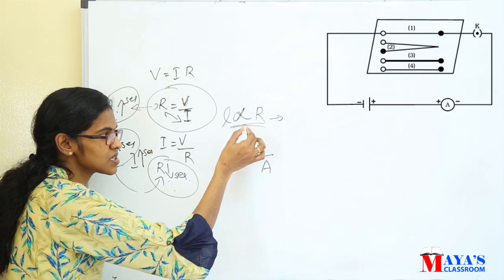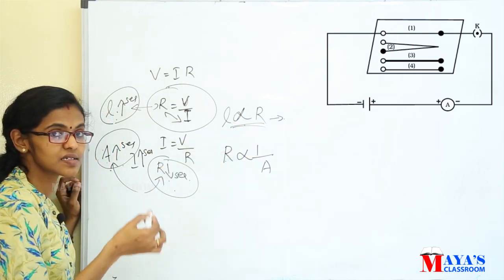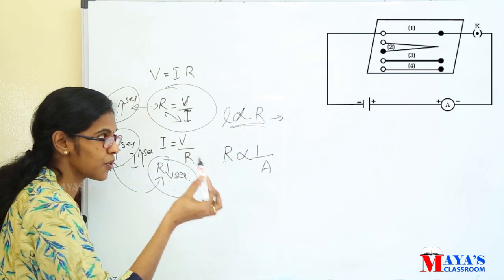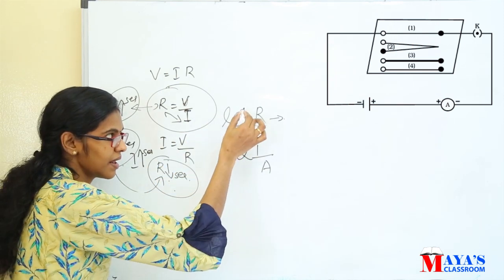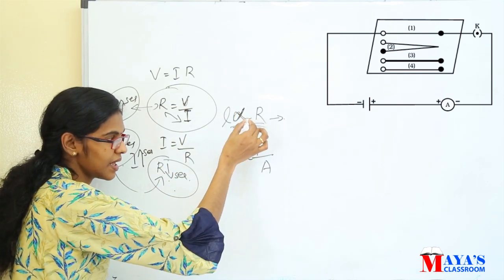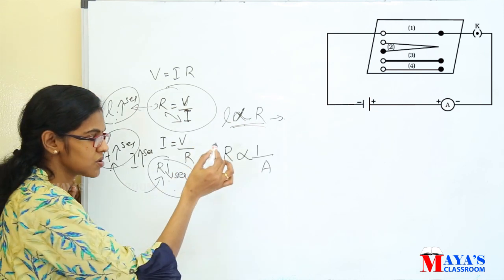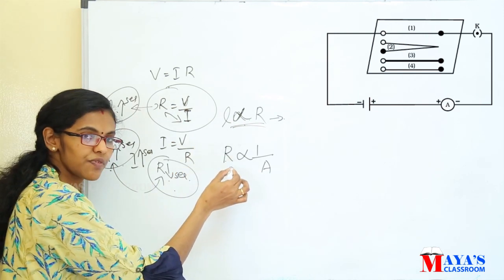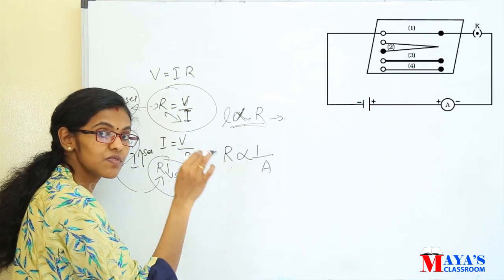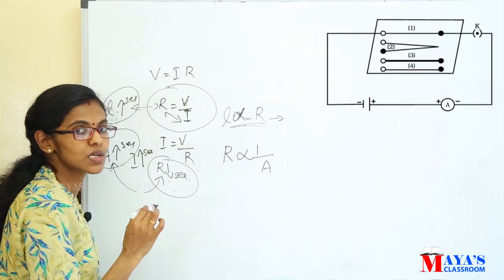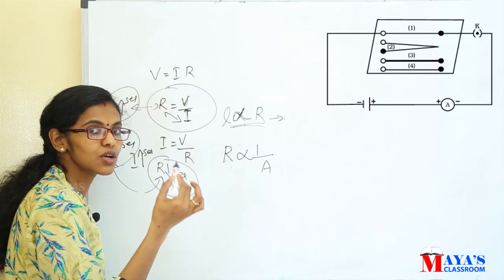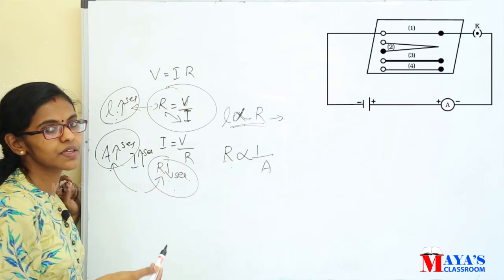Therefore, resistance of a conductor is directly proportional to the length, and resistance of a conductor is inversely proportional to the area of cross-section of the conductor.